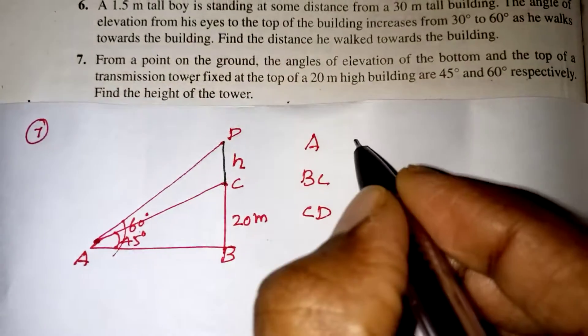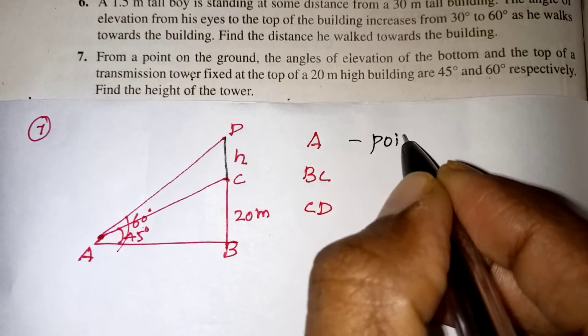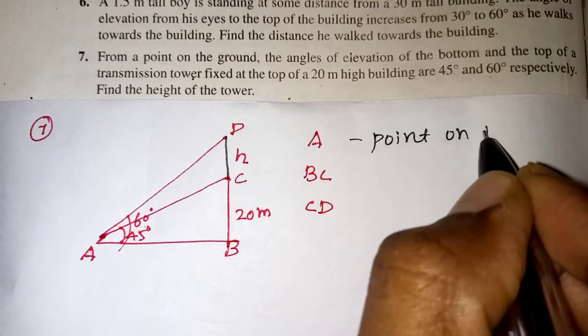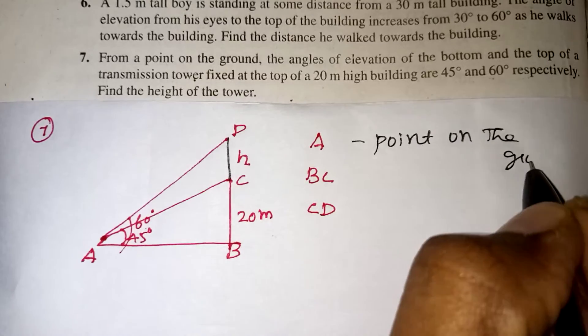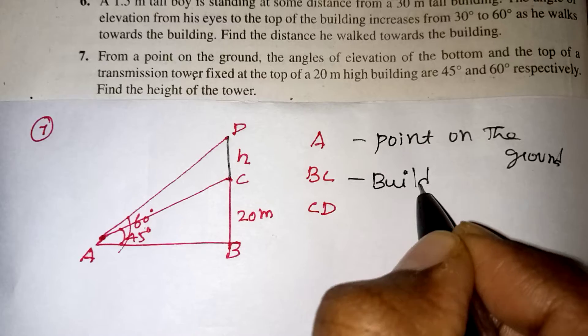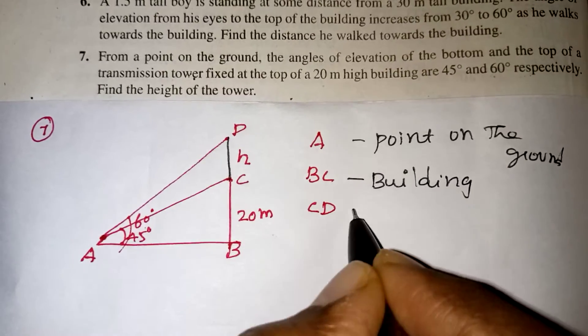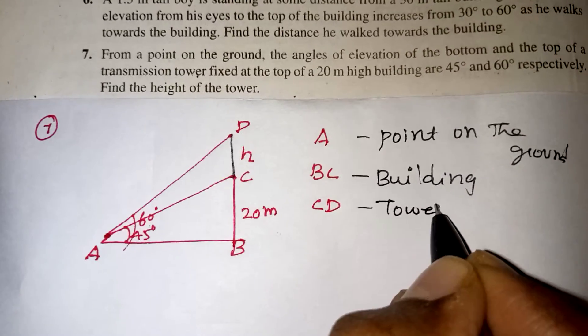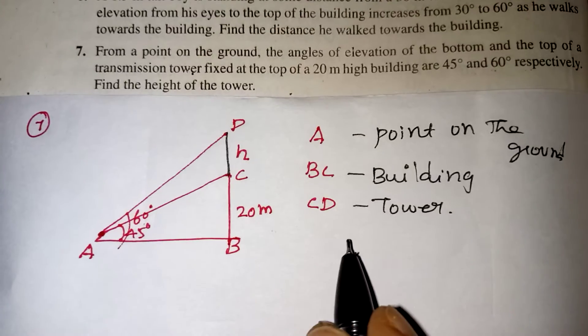We have taken A is a point on the ground, BC is nothing but our building that is given as 20 meter, and CD is a tower, the transmission tower we have taken.